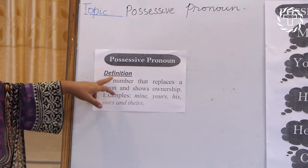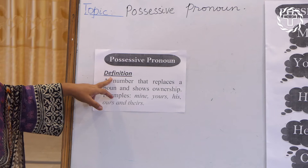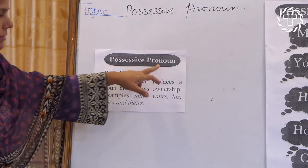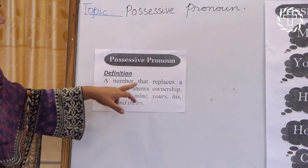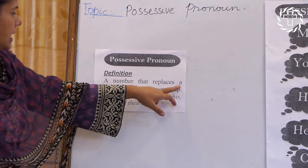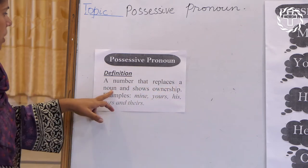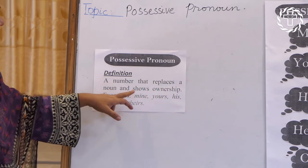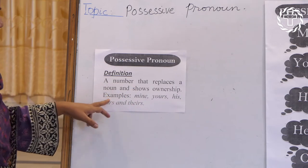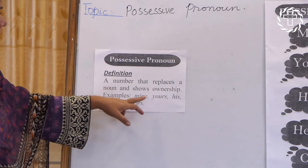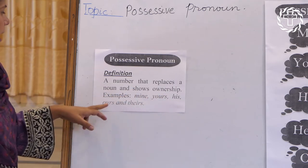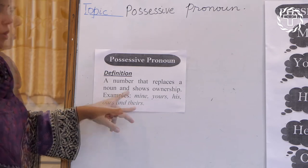Once again, definition — possessive pronoun: a pronoun that replaces a noun and shows ownership. Examples: mine, yours, his, hers, and theirs.